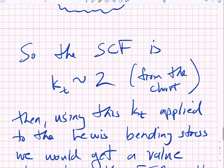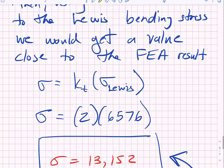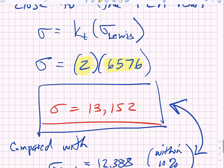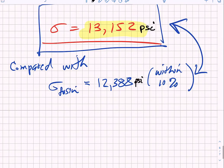So now using a KT of 2 from the chart I multiply my Lewis bending stress by 2 and I get a value of 13,152 PSI. I compare that to the value I got from FEA which is 12,388 and I am within 10%. So that explains the difference between the hand calc and the FEA.